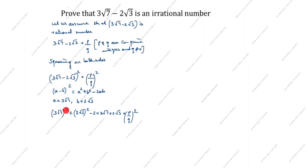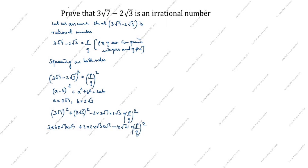Next step we will split this. 3 into 3 into root 7 into root 7, plus 2 into 2 into root 3 into root 3, minus — 2 times 3 is 6, 6 times 2 is 12 — root 7 into root 3 is root 21. So minus 12 root 21, equal to p by q whole square.